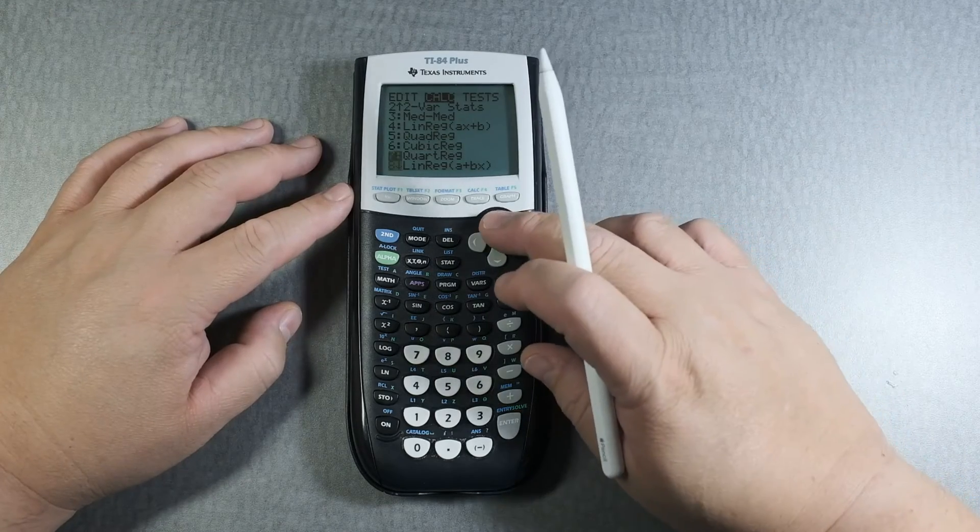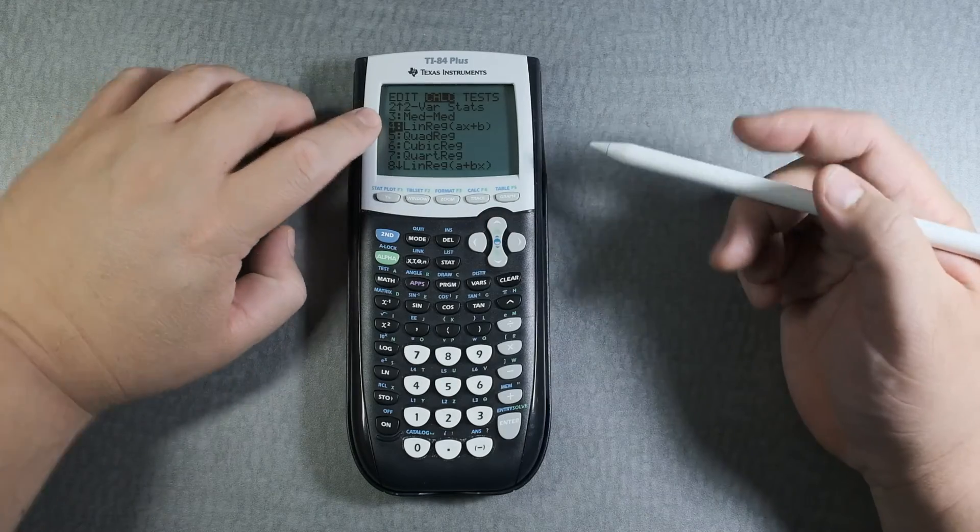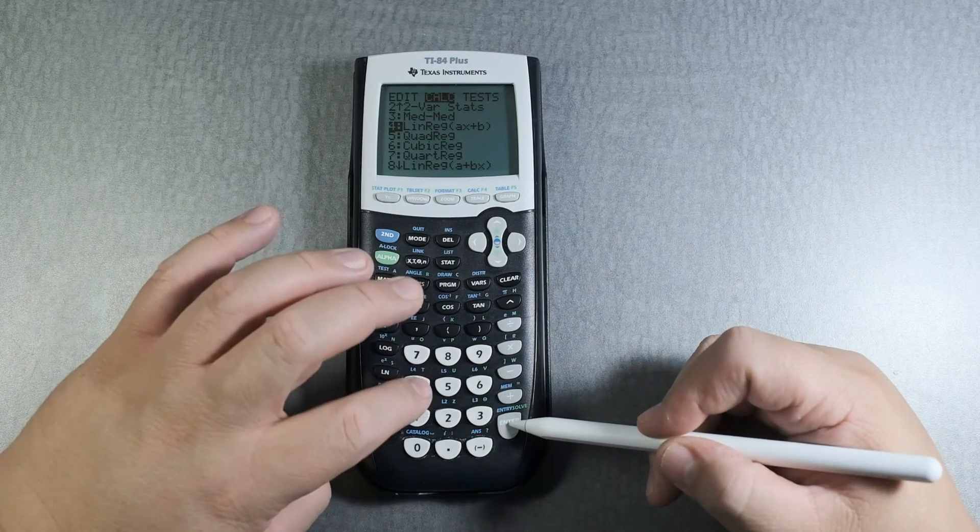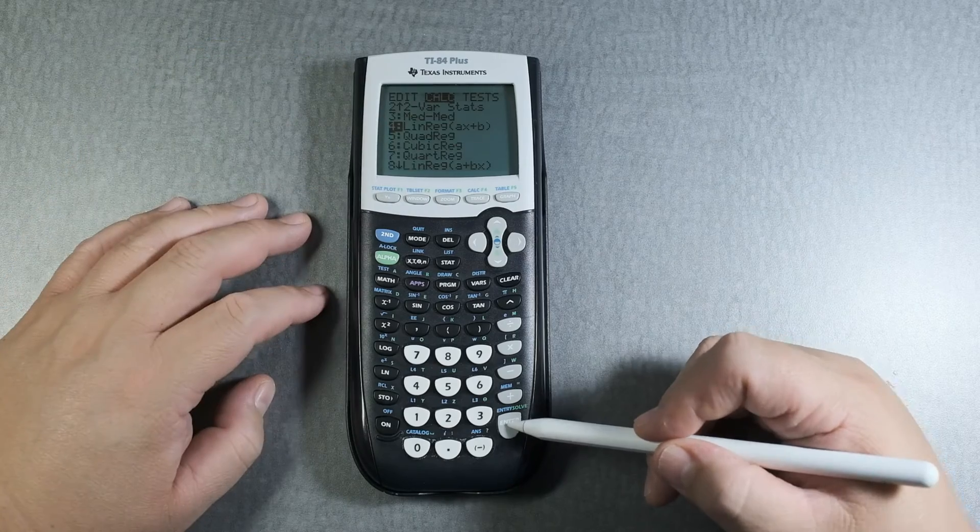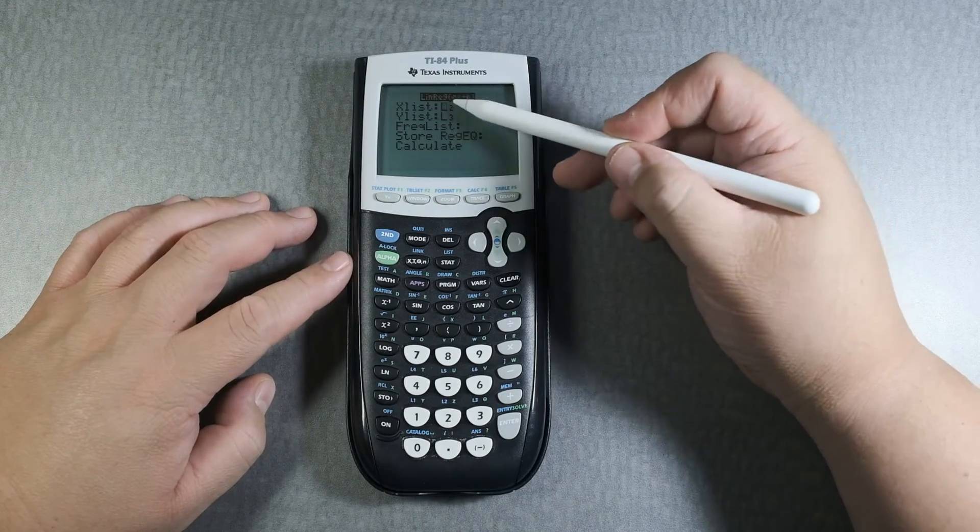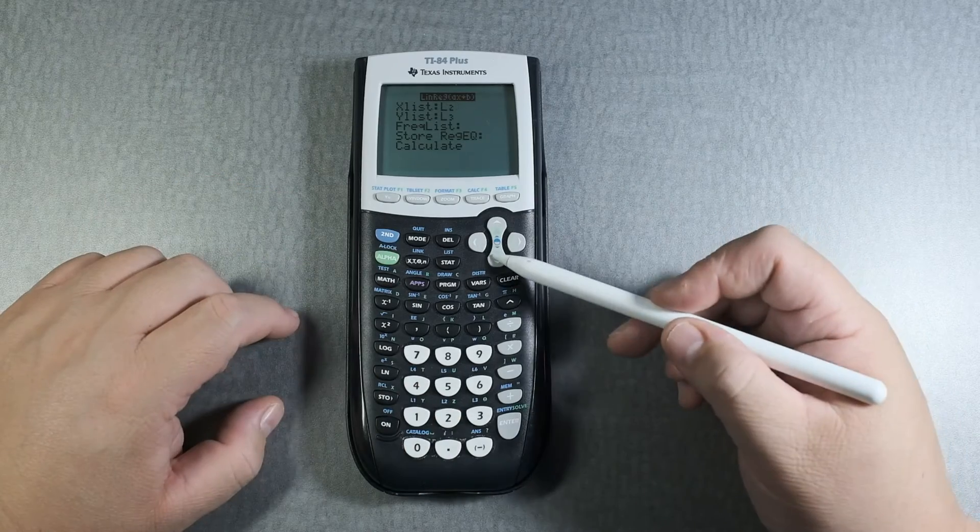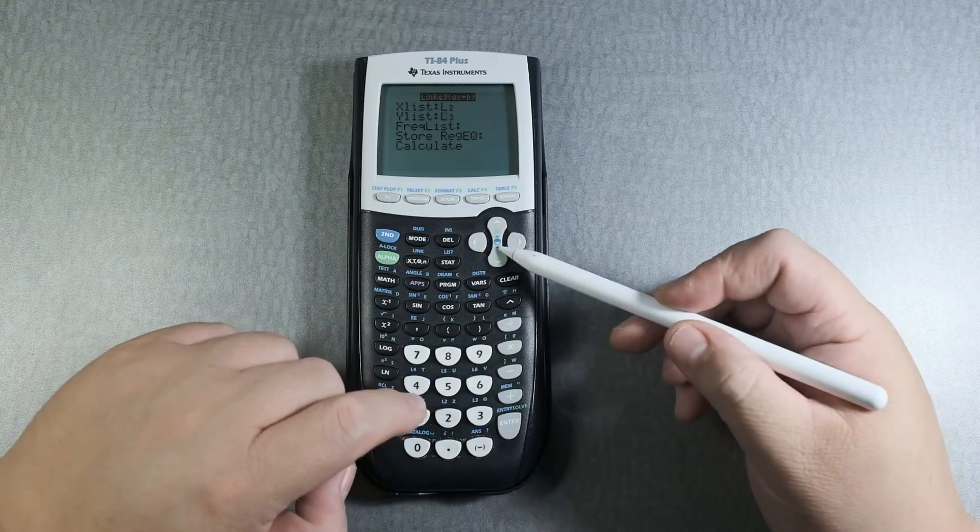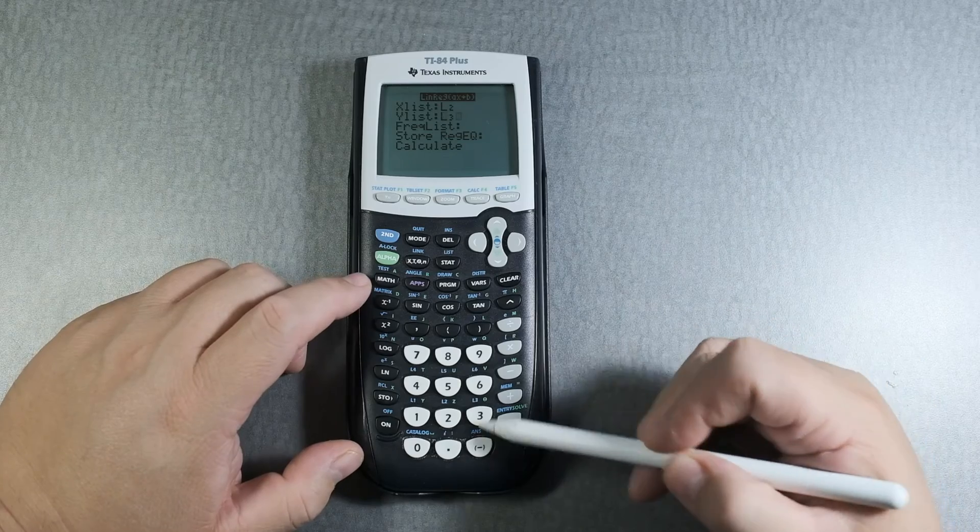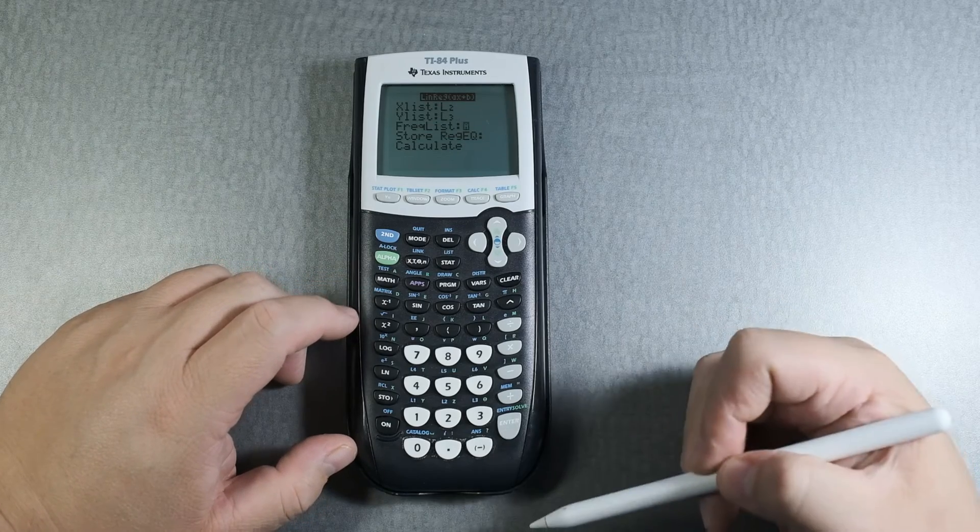I'm gonna do 4 here. I can type 4 or scroll to 4 and then enter. Then I'm going to type for X list, it's going to be L2, and then scroll down, L3. Enter, enter.